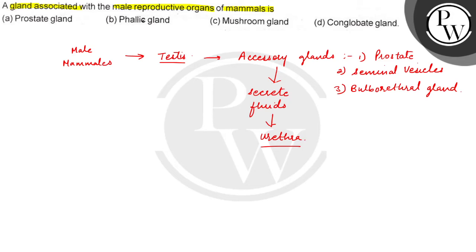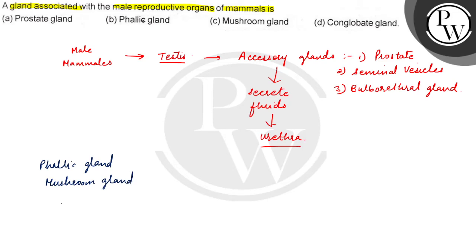So, the gland associated with male reproductive organs of the mammals is the prostate gland. If we look at the other options, we have pellic gland, mushroom gland, and conglomerate gland.